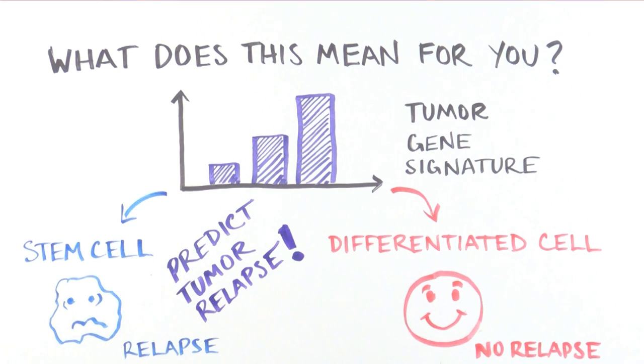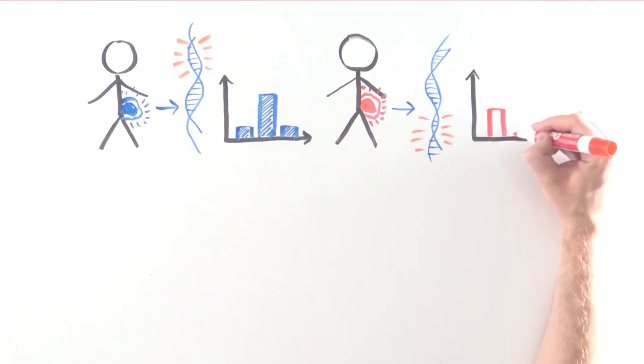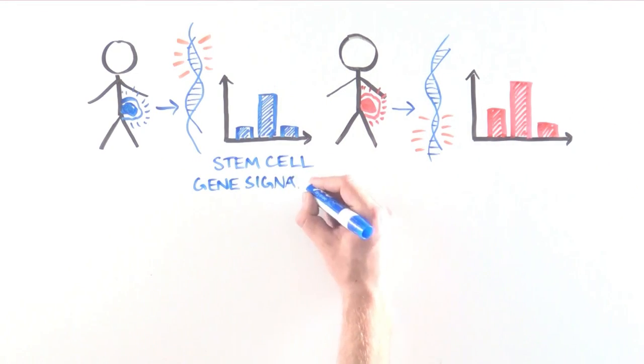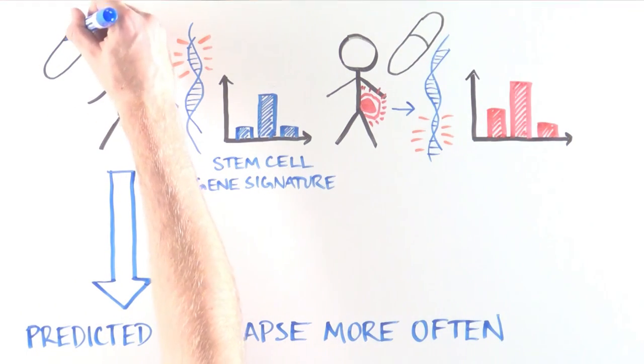If two patients present to the clinic with colon cancer, one of them has a tumor with a stem cell gene signature and the other doesn't, the first patient is predicted to relapse more often. In light of this new information, perhaps these two patients should get different cancer treatments.